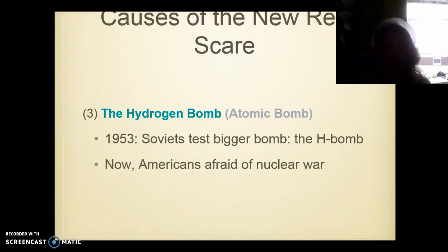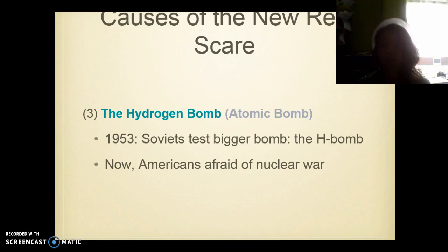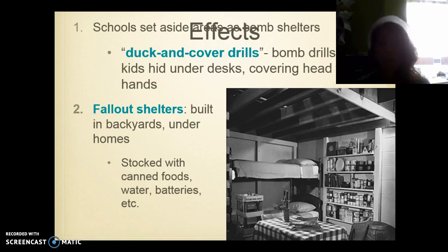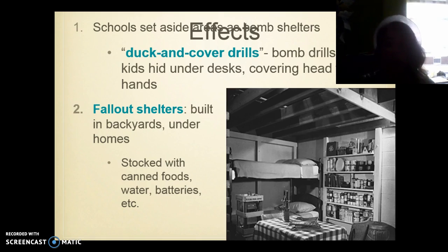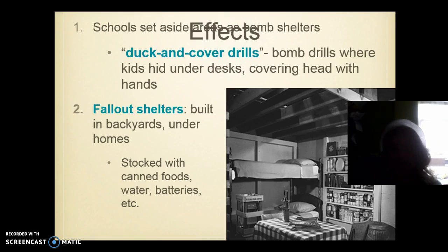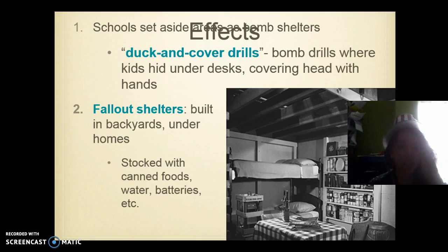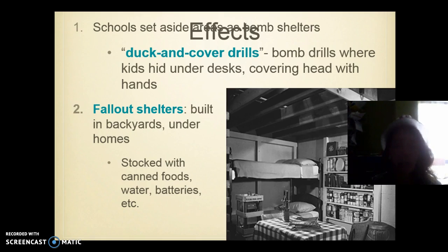Lastly, the hydrogen bomb. The Soviets tested the bigger bomb — the H-bomb. Now Americans were very afraid of nuclear war because the Soviets had the biggest bomb. The effects of the Red Scare included schools setting aside areas as bomb shelters, duck-and-cover drills where kids hid under their desks covering their heads with their hands, and fallout shelters built in backyards. Just like we have tornado drills today, they would have bomb drills — they'd get under the table in case of a blast, which we know probably would not have saved them.